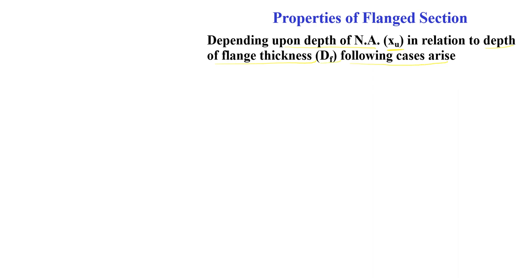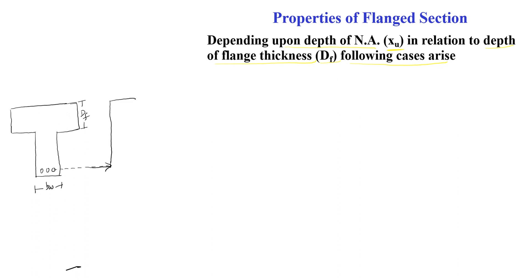Based on the depth of the neutral axis xu and the depth of the flange df, there are different cases. For a flange section under load, tension is taken by the steel and compression is taken by the flange or by the flange and web together. Case 1: xu is less than df — the neutral axis lies entirely within the flange, so the entire compression is taken by the flange.